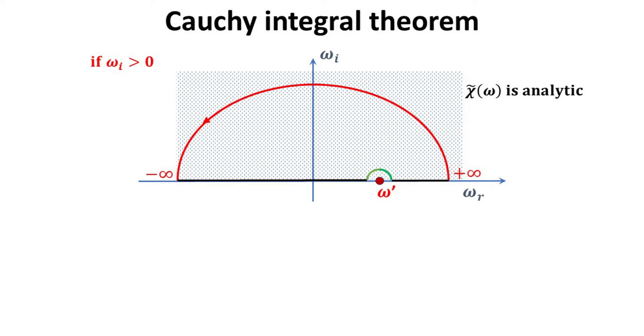To proceed, let's break up our contour into three pieces as shown. The integral over omega r from plus minus infinity, but excluding omega prime. This is mathematically represented by the principal value integral as shown.